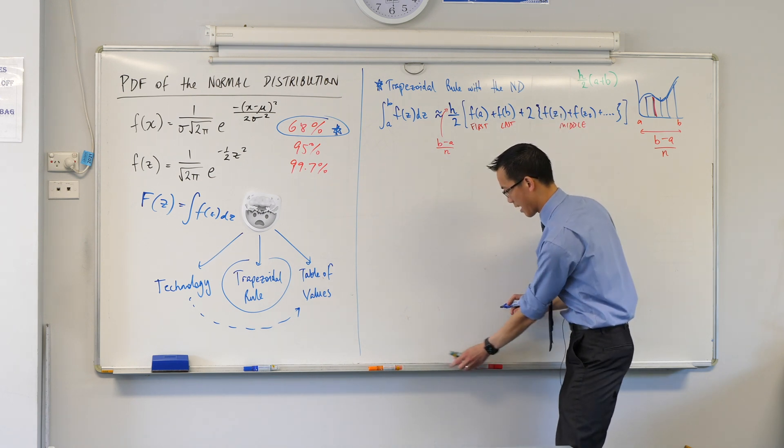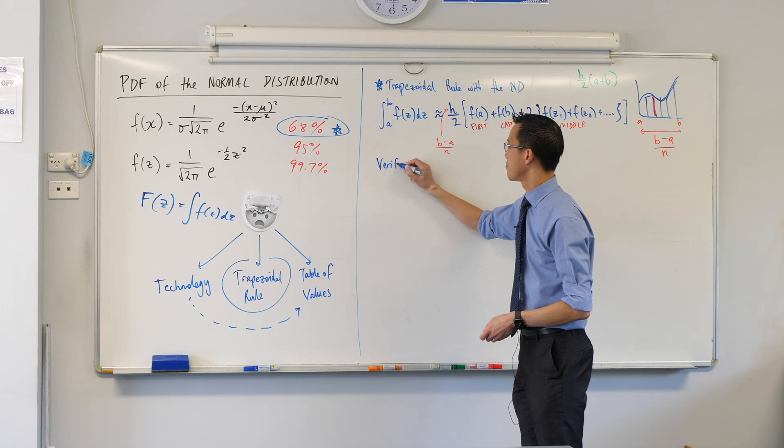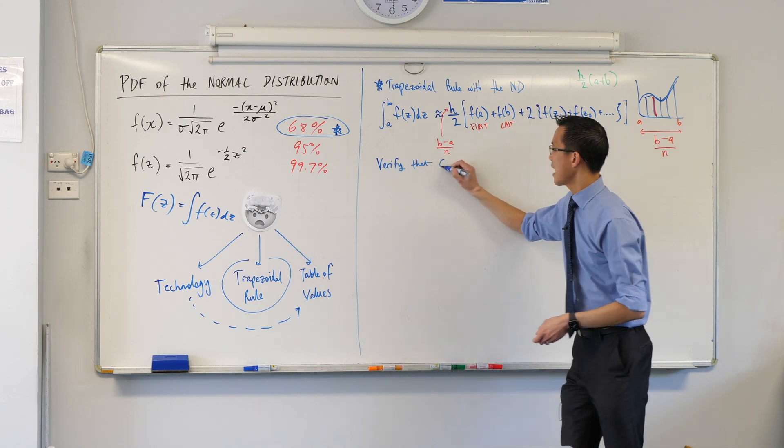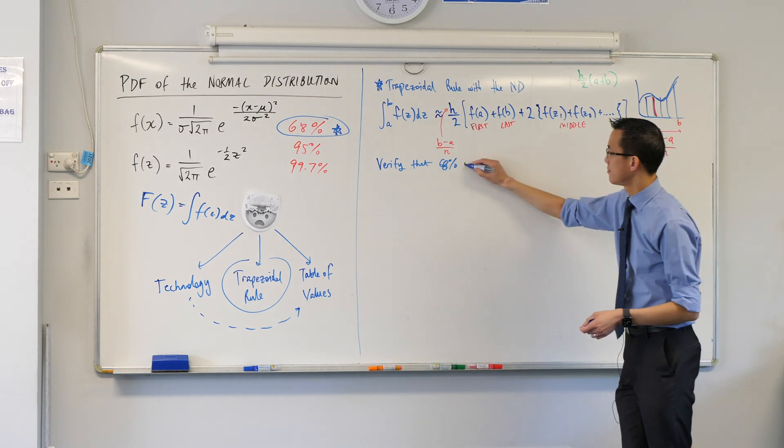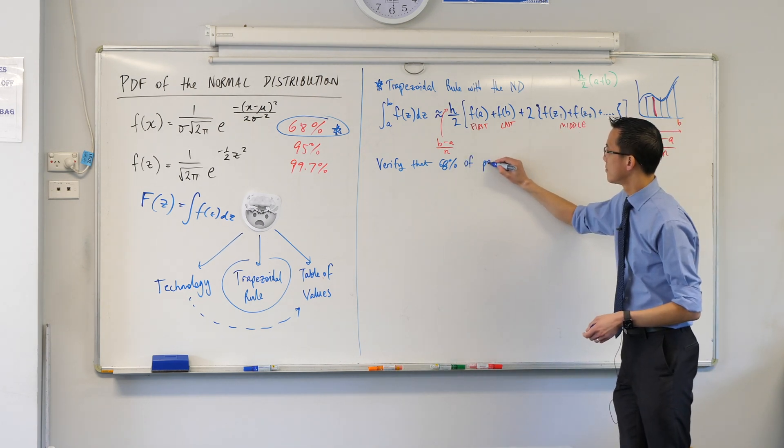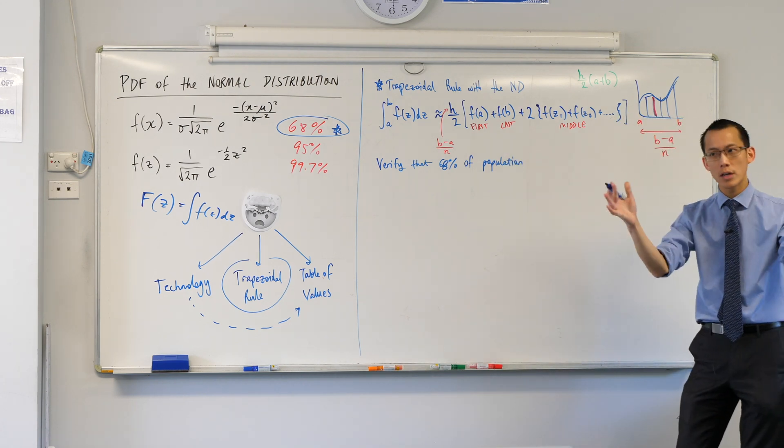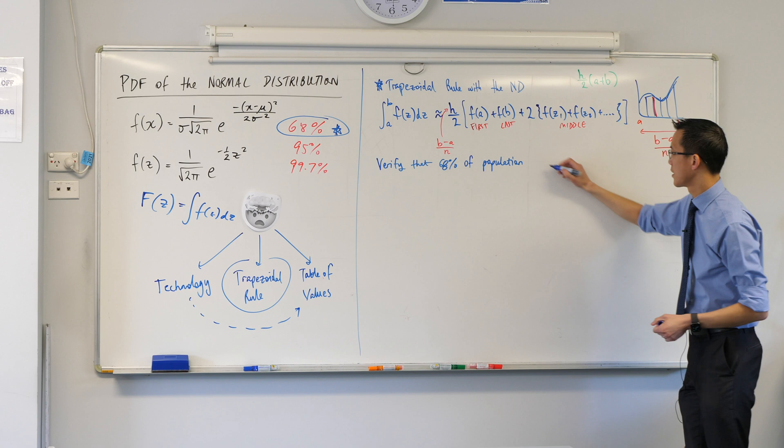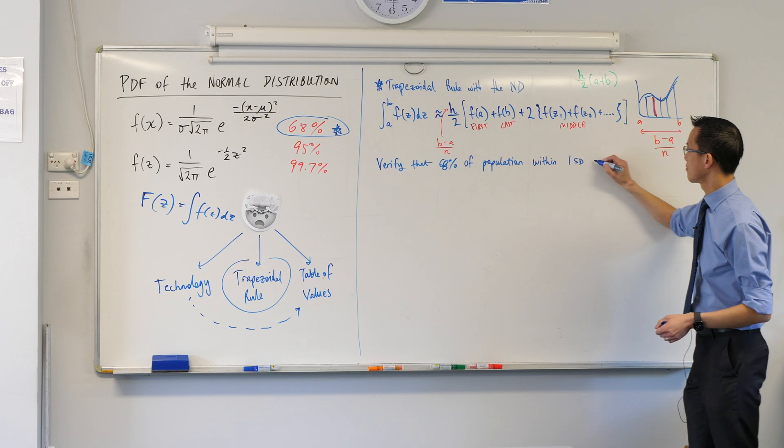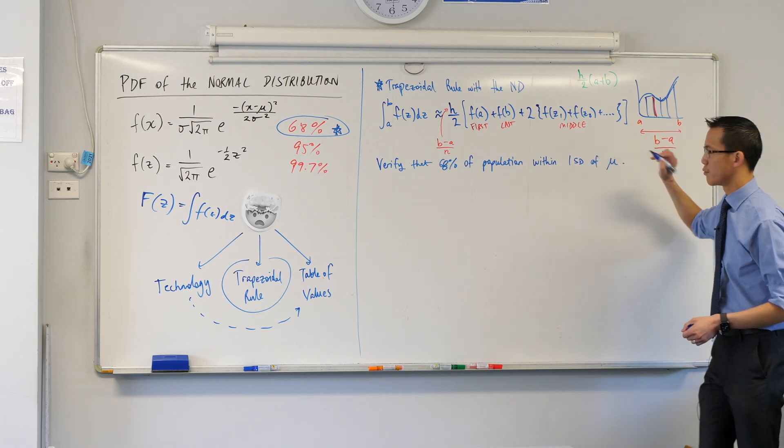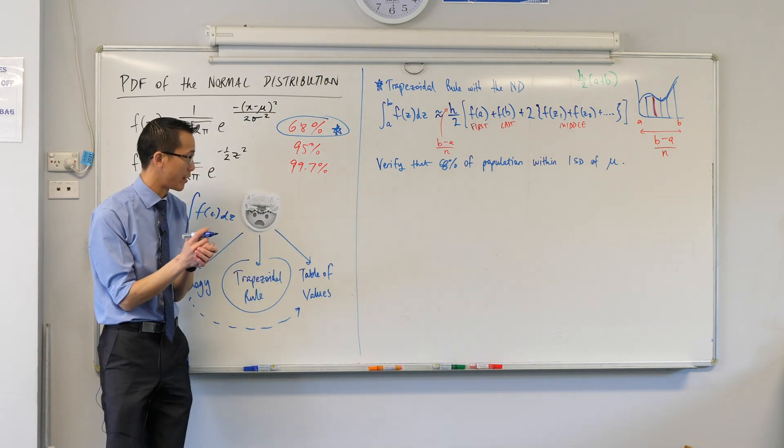Maybe we should write that down. What are we trying to do? We're trying to confirm or verify that 68% of a population is within one standard deviation of the mean. Within one standard deviation of the mean. And I'm just going to write mu there because I think we've written this enough that we get the sense that that's why we use that Greek letter.